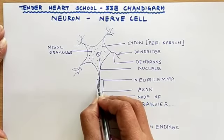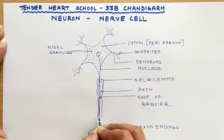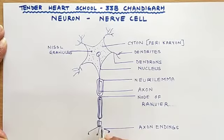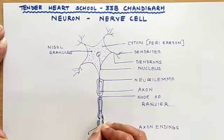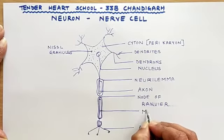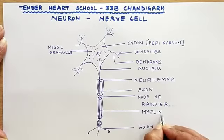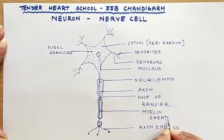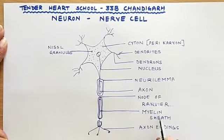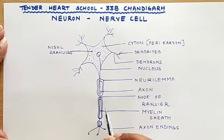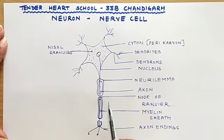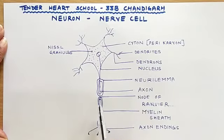Also inside the neurolemma we have the myelin sheath, which is again covering the axon. We can label it as myelin sheath, also called the medullary sheath. This myelin sheath or medullary sheath covers the axon and prevents the intermixing of impulses between various neurons. In a nerve, which is a bundle of neurons, when various neurons are bundled together the impulses may mix with each other, so to prevent this intermixing we have the myelin sheath.